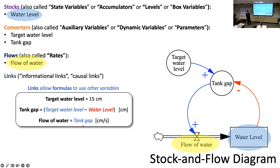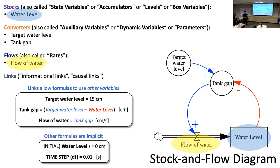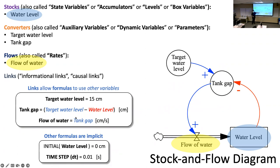We're assuming that missing piece is equal to one, so we don't worry about it at this level. In a more advanced model the units will match up. For now, include all the formulas, plus the initial water level of zero and the time step. You always present the stock-and-flow diagram together with these formulas — anyone can then take your diagram, reproduce your results. That's what we really care about: reproducibility.